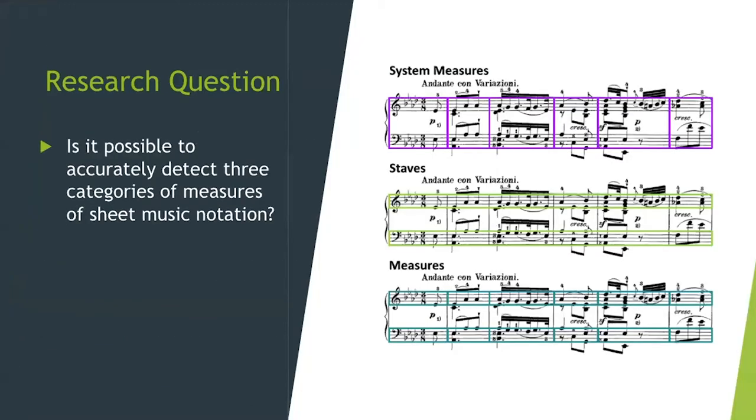The research question is whether it's possible to accurately detect three categories of measures in music sheet notation for both handwritten and typeset music. These three categories are system measures, staves, and regular measures that span across one page.